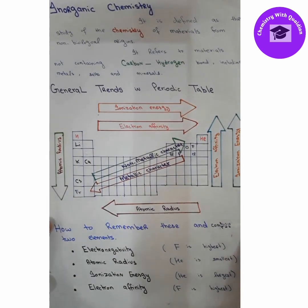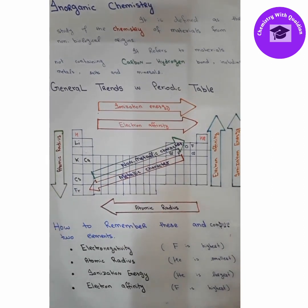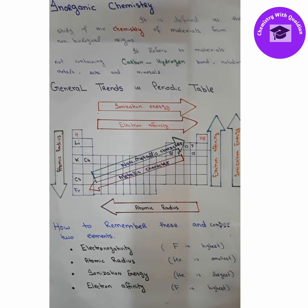Now let's move to ionization energy. Ionization energy is the amount of energy required to remove an electron from the outermost shell. Elements that have loosely bound electrons will lose their electrons easily and their ionization energy will be low. Those atoms which have tightly bound electrons cannot lose their electrons easily and their ionization energy will be higher.